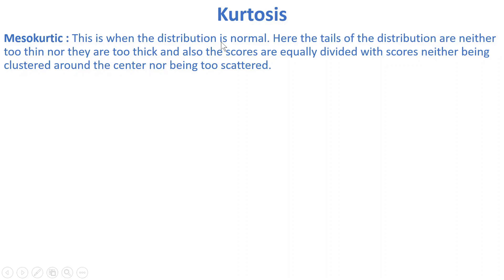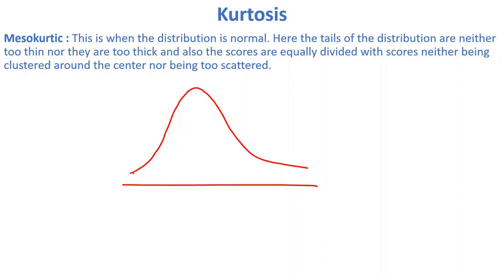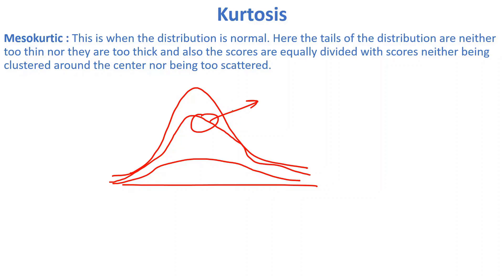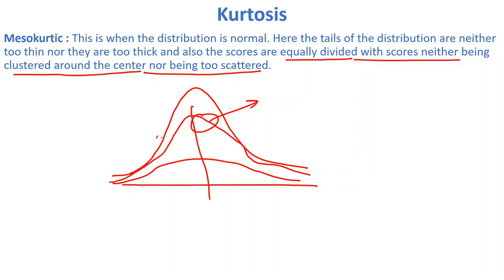The third type is mesokurtic, when the distribution is normal. Unlike the leptokurtic (tall peak) or platykurtic (flattened), a mesokurtic distribution is just like a normal distribution — where data is equally divided, with scores neither being clustered around the center nor too scattered, making it almost symmetric.